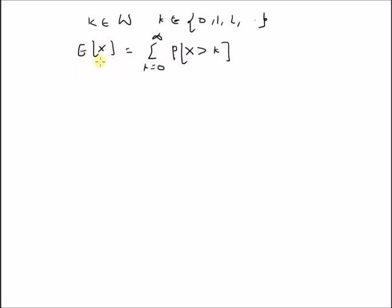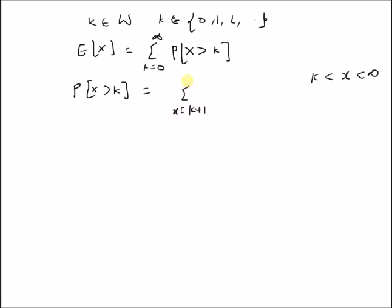So the expectation of the discrete random variable can be written as a summation of a series of probability values, where the probability P(X > k) basically means that the value of x lies between k and infinity. This can be written as the summation x equal to k plus 1 to infinity of P_X(x), which is the definition of probability of x greater than k.